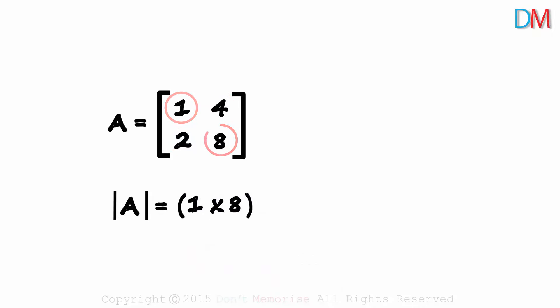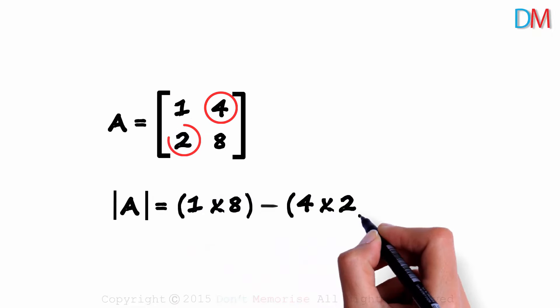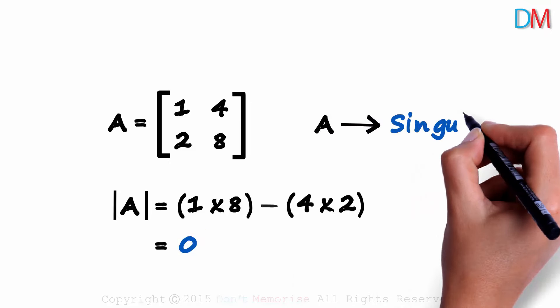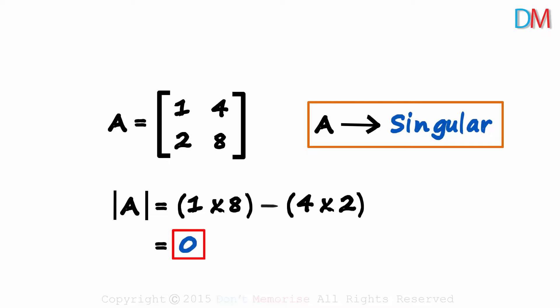1 multiplied with 8 minus 4 multiplied with 2. 8 minus 8 will give us zero. The determinant of A is zero, which means that matrix A is singular. Determinant zero, then singular.